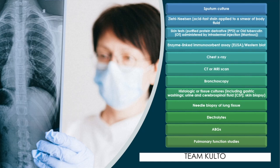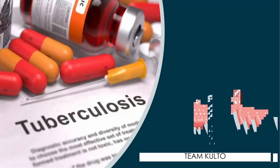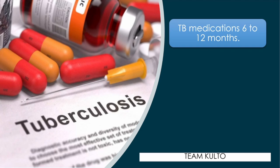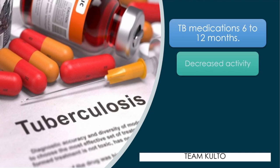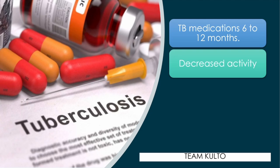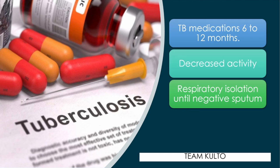Pleural disease is common in extensive chronic pulmonary TB. Now, what are the medical management options for PTB? TB medications normally last for 6 to 12 months. Decreased activity — instruct the patient to do minimal or decreased activity to preserve energy and avoid the spread of infection. Respiratory isolation is advised for patients who are positive for tuberculosis until negative sputum is obtained.